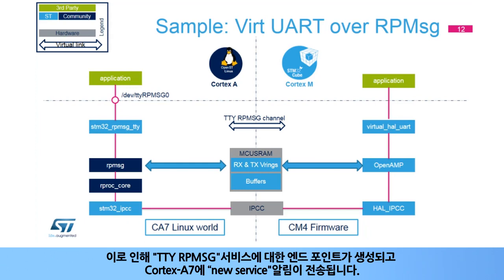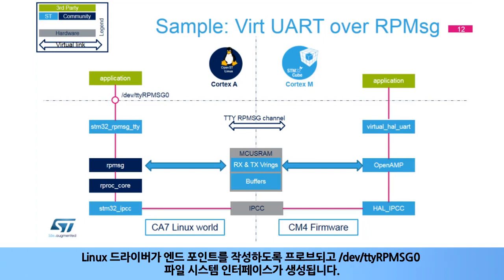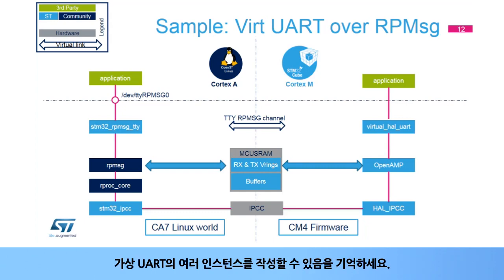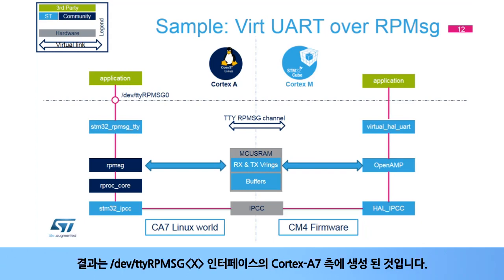On the Cortex-M4 core, a virtual HAL-UART service is the RPMSG client. It provides an HAL-UART API for the application and also provides the same adaptation layer between the UART and the RPMSG protocol. The RPMSG channel is created by the initialization of the virtual UART on Cortex-M4. This triggers the creation of an endpoint for the TTY RPMSG service and the sending of the new service announcement to the Cortex-A7. On the Cortex-A7 side, the message is processed and the corresponding service is associated to the STM32 RPMSG TTY driver. The Linux driver is probed to create an endpoint and a /dev/tty-RPMSG0 file system interface is created. Note that it is possible to create several instances of the virtual UART, each creating a new endpoint per instance, resulting in a /dev/tty-RPMSG-X interface on the Cortex-A7 side.